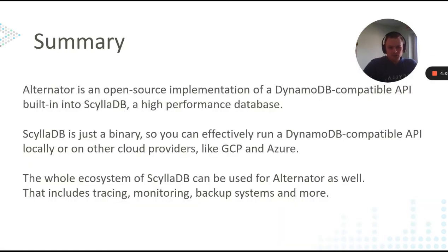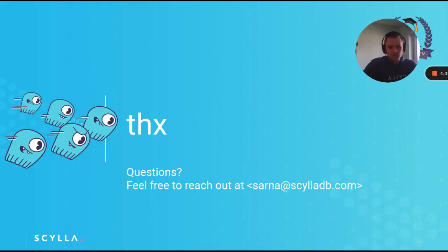That sums up my lightning talk. Alternator is an open source DynamoDB-compatible API that runs on top of ScyllaDB, a super high performance database. You can deploy it locally or on Google Cloud, Azure, or any other vendor, which is quite cool. Various tools from the ScyllaDB ecosystem — like tracing, monitoring, backups, and many more — can be used with Alternator and simply work. You're welcome to play with it and see if it's worth switching from the original DynamoDB. Please reach out if you have any questions or would like to contribute to the project since it's open source. Thanks, everyone.